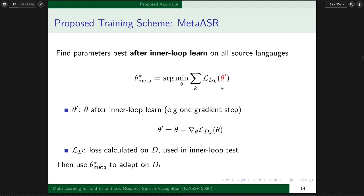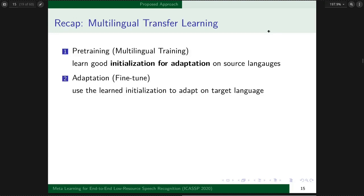Here's how we apply MAML's idea to speech recognition. We want to find theta that is good for individual languages after inner-loop learn. I use theta prime here. For simplicity, I use one gradient step as inner-loop learn. Theta prime can be obtained through this equation. LD is loss calculated on D, used in inner-loop test. We want parameters good after inner-loop learn on inner-loop test. After the whole meta-train process, we use theta star to adapt on Dt.